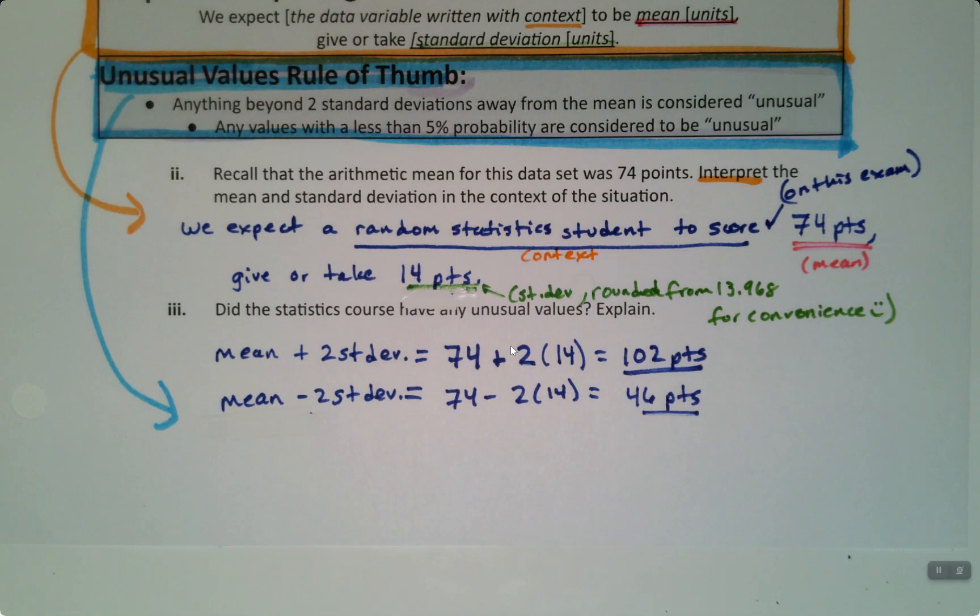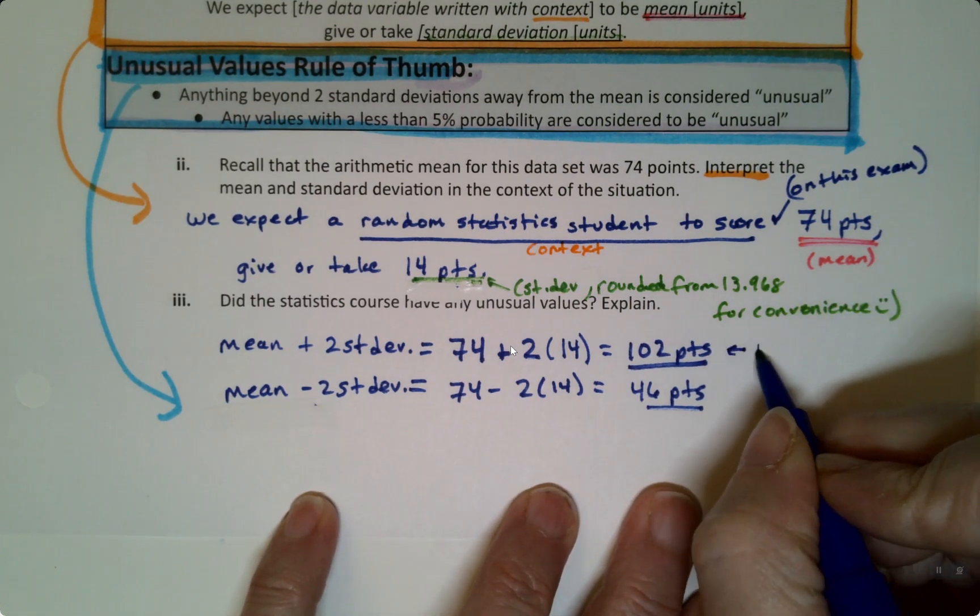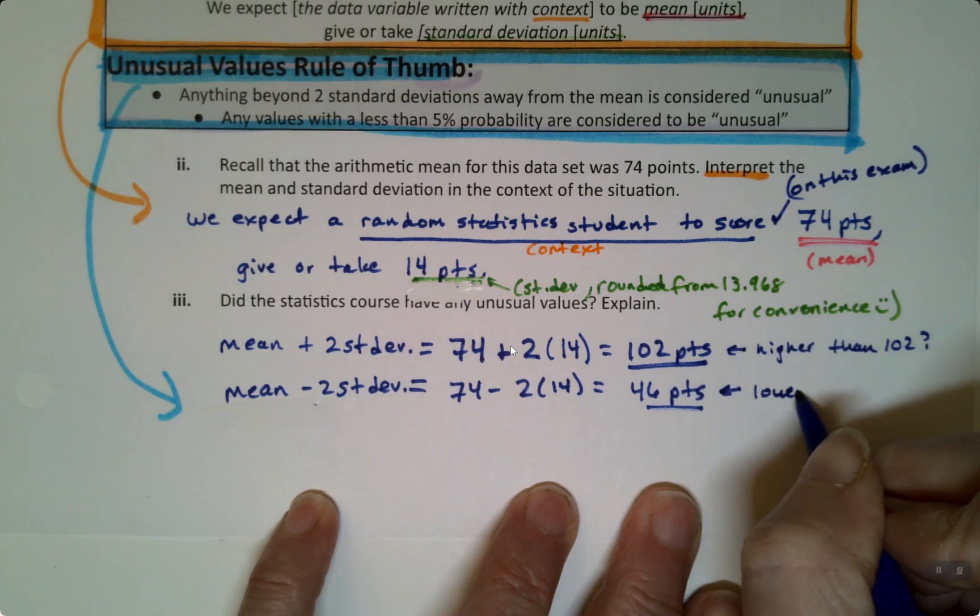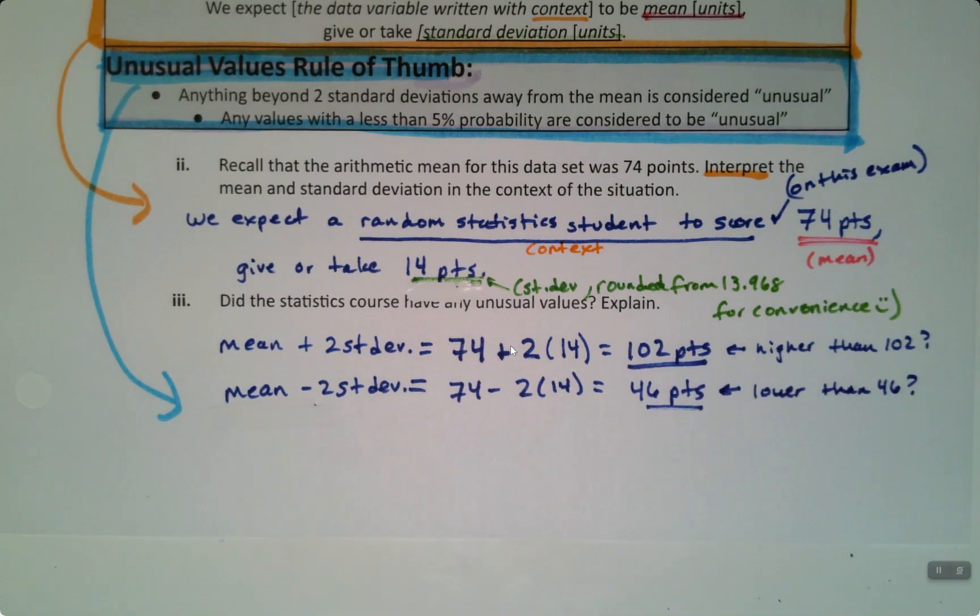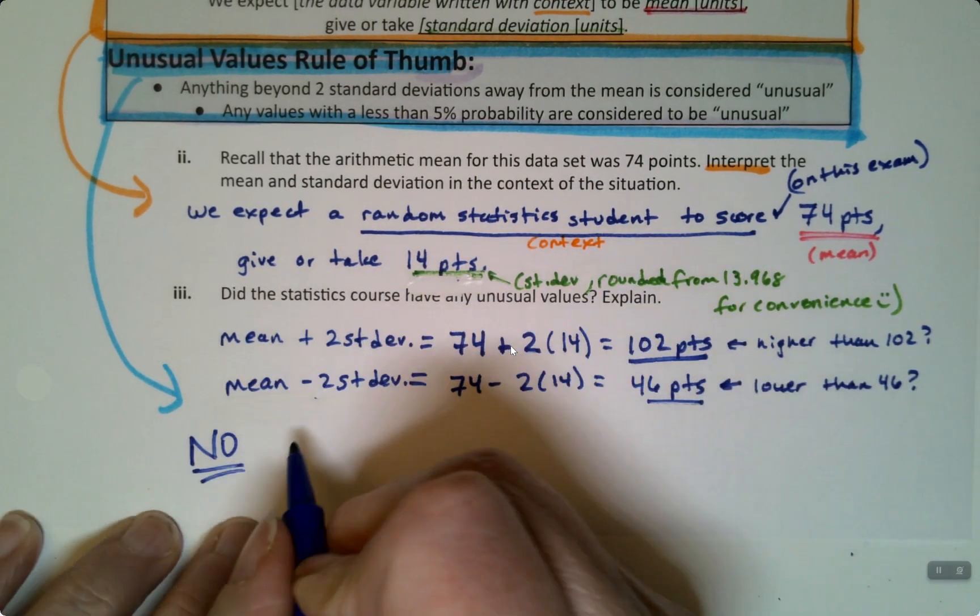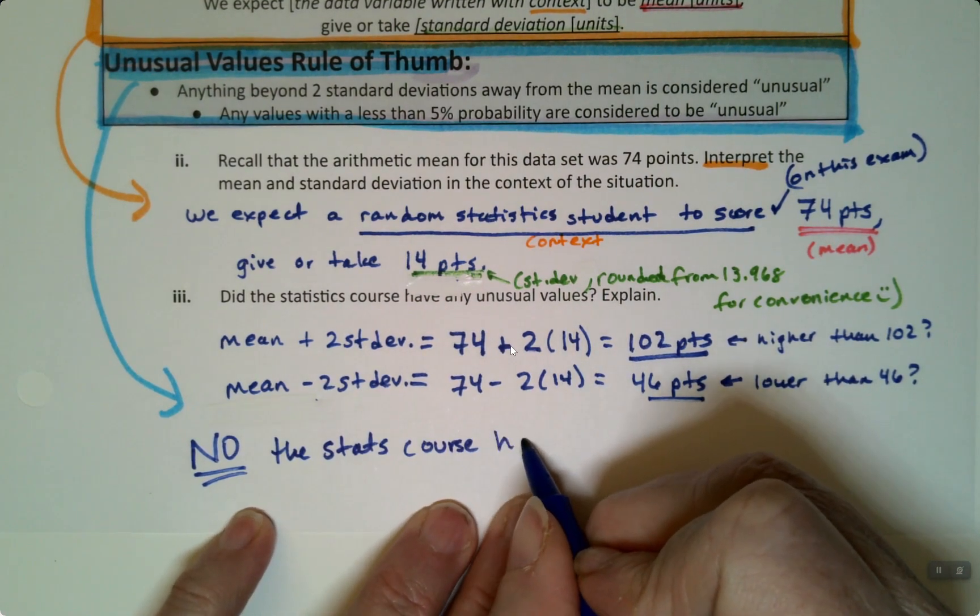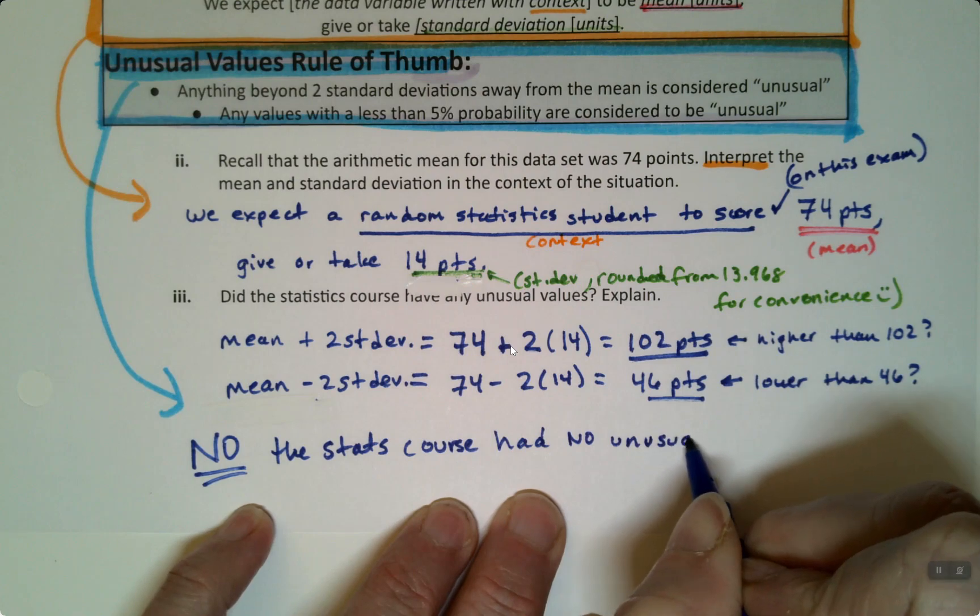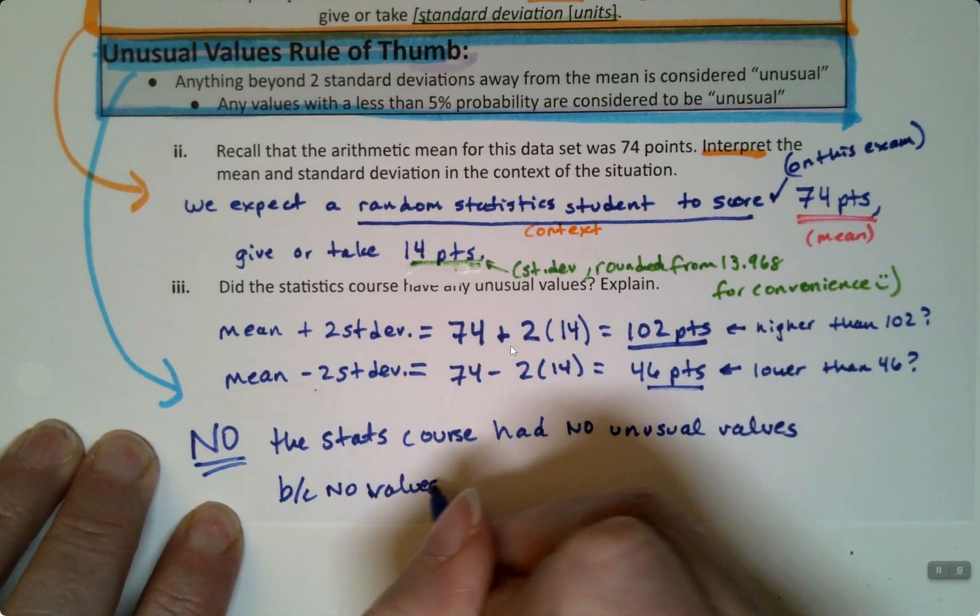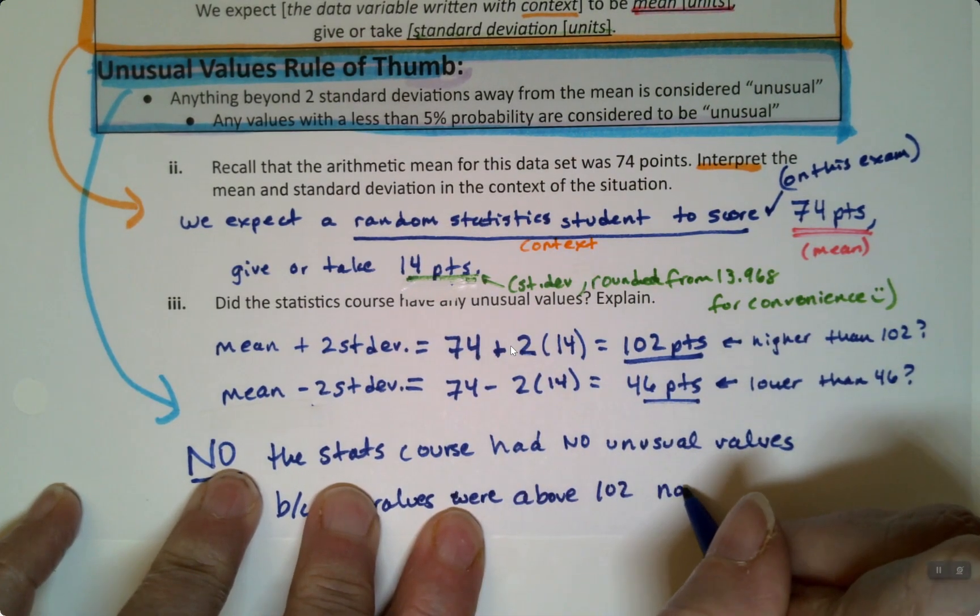So now the question is, are there any unusual values? Well, unusual values would be anything higher than this would be unusual. Higher than 102 or lower than 46? And the answer is no, we didn't have either of those things. Right. So did the statistics course have any unusual values? No. The stats course had no unusual values because no values were above 102 nor below 46.